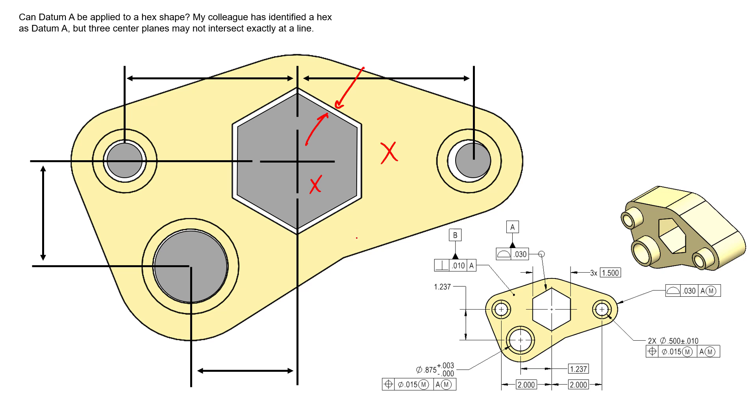We should allow inspection to do the same, and that's called datum shift. We're allowing inspection to shift the feature away from the datum simulator. And the size of this datum simulator is the MMB of our irregular feature of size.